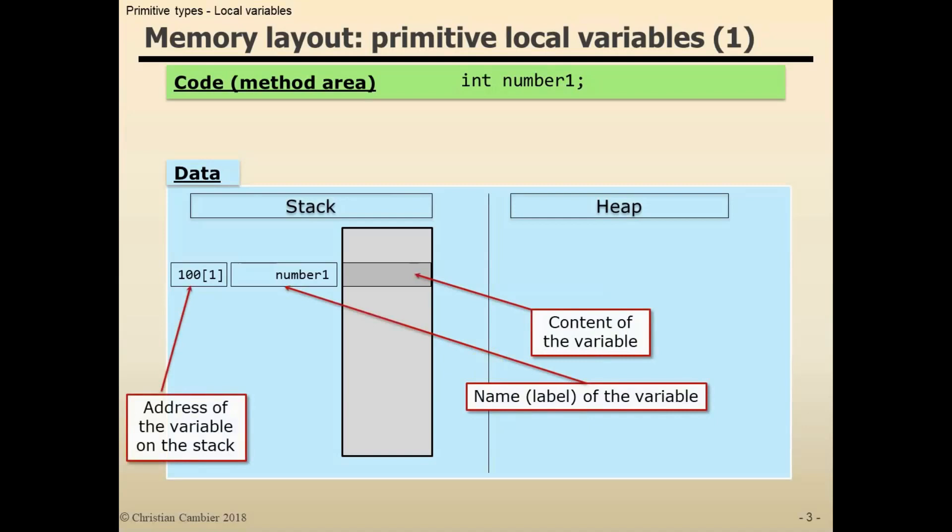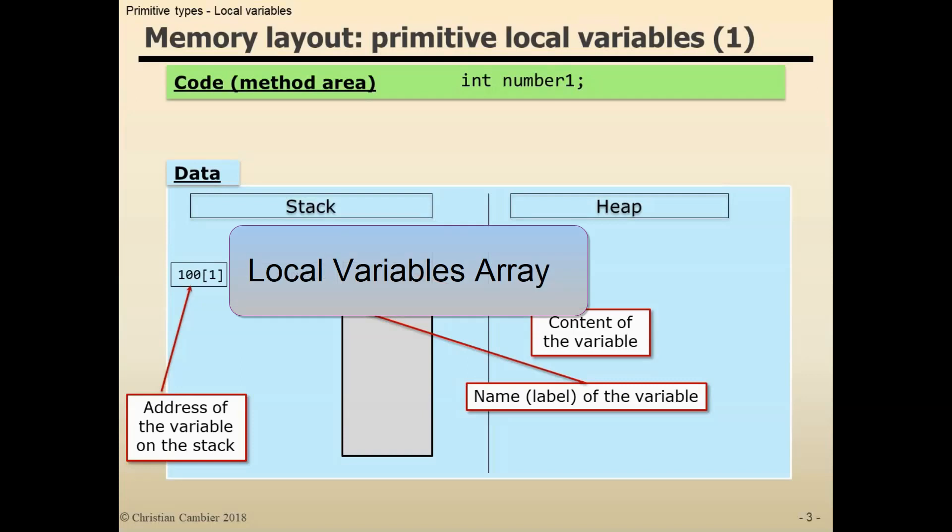What does this notation 100 followed by square brackets 1 mean? Local variables and parameters are stored in what is called a local variables array. In this array, variables are stored one next to the other at a position denoted by an index.